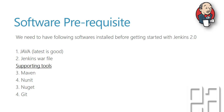Software prerequisites before we start installing Jenkins: we need Java (latest version is good) and the Jenkins WAR file — those are the two most important prerequisites. The supporting tools are Maven, NUnit, NuGet, and Git. These are required for getting started with Jenkins 2.0 since we'll be working with these tools throughout our course.